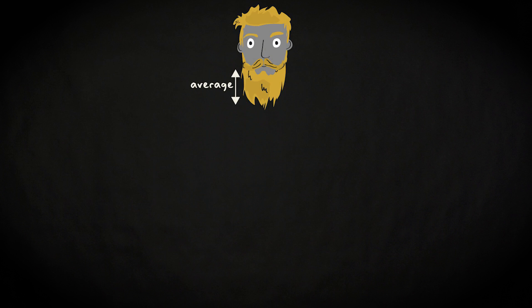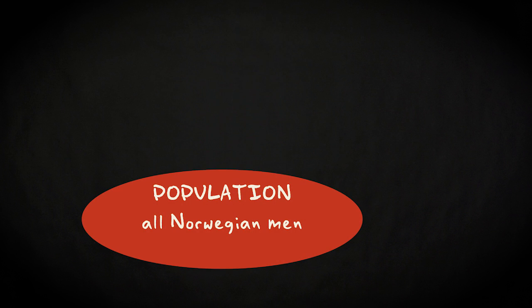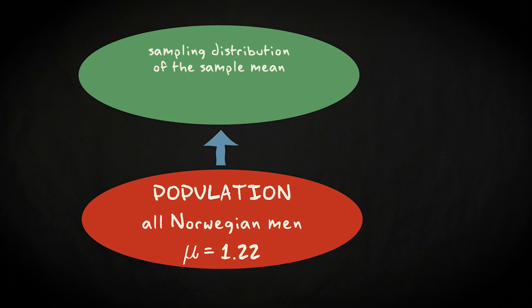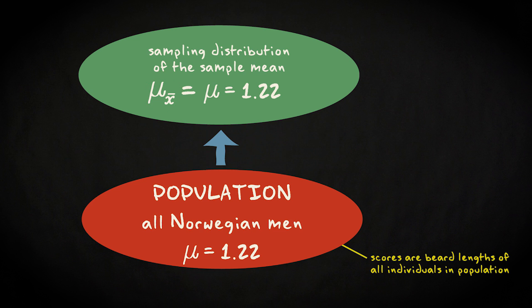Imagine you're interested in the average beard length of Norwegian men. The population consists of all Norwegian men, and mu is the mean beard length in the population — let's assume that it's 1.22 millimeters. The mean of the sampling distribution of the sample mean, which is the mean of the distribution that we would get if we drew an infinite number of samples from the population and wrote down the mean beard length in each sample, is equal to the population mean 1.22. The x-bar is added to emphasize that the scores in the sampling distribution are sample means, and not individual scores.